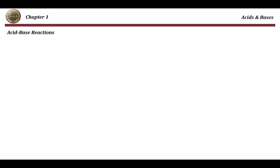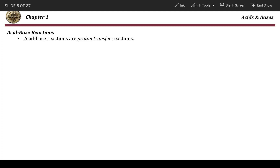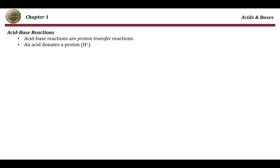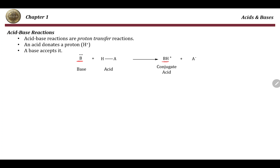In this video I will talk about acid-base reactions in organic chemistry. An acid-base reaction is a proton transfer reaction where an acid donates a proton and a base accepts this proton. This definition is based on the Bronsted-Lowry definition, which defines acids as proton donors and bases as proton acceptors. In this reaction, B is acting as a base because after the reaction B accepted H+, whereas HA is acting as an acid because it donated H+ and became A minus.